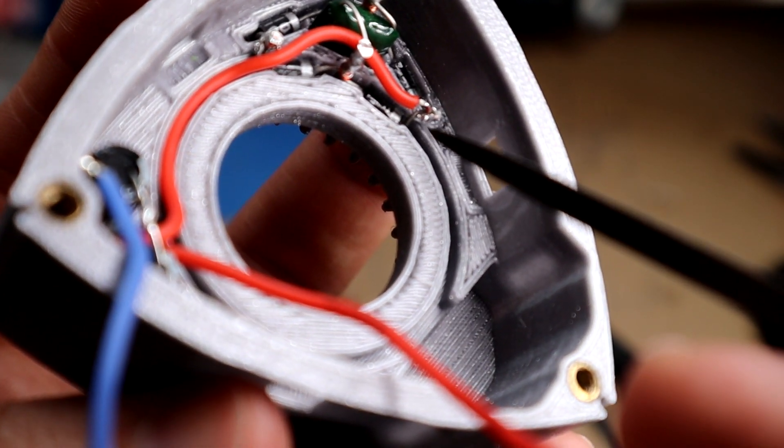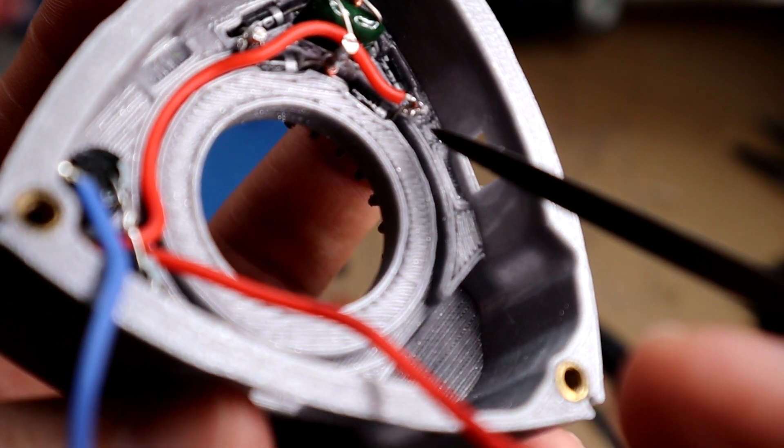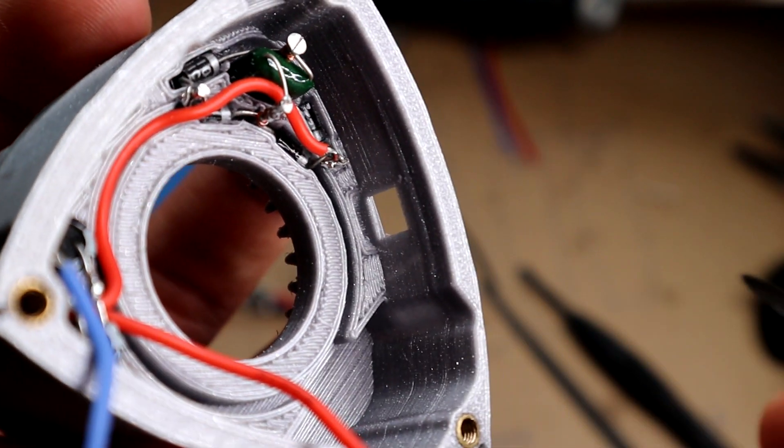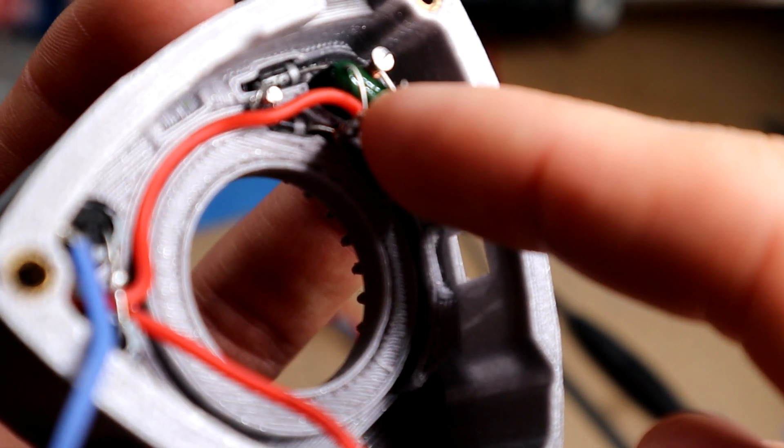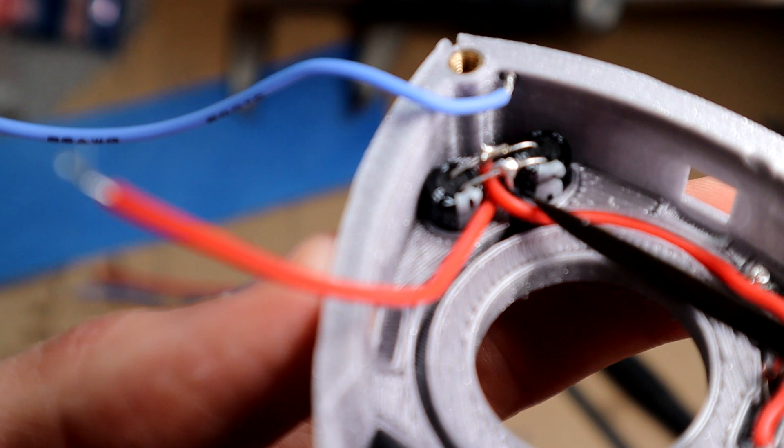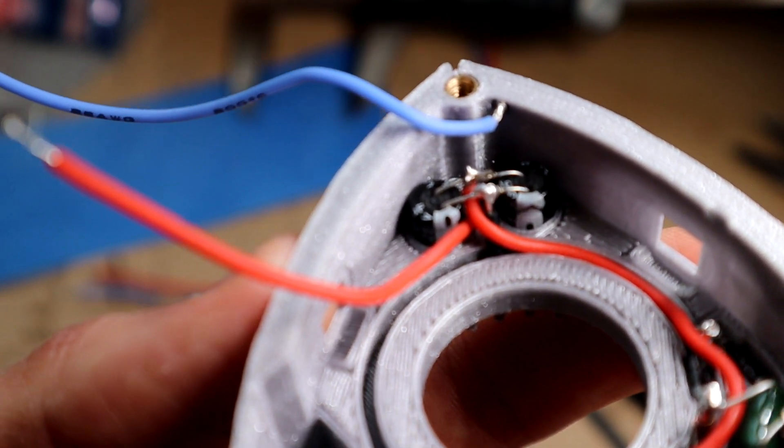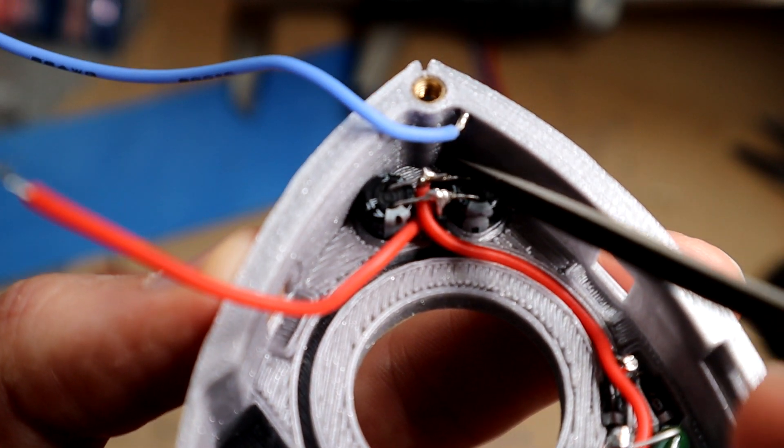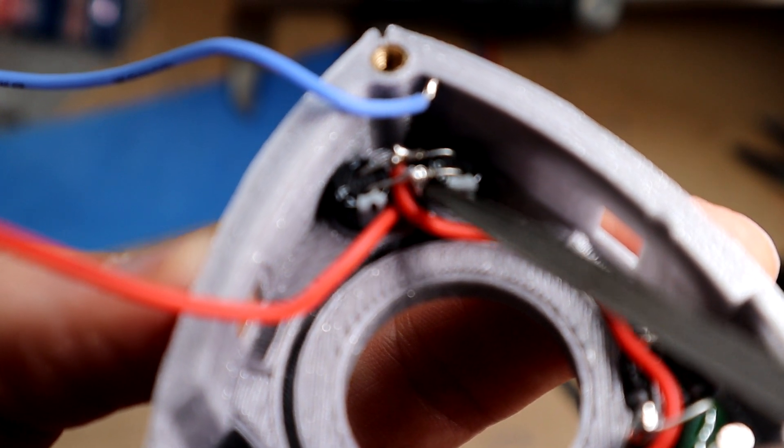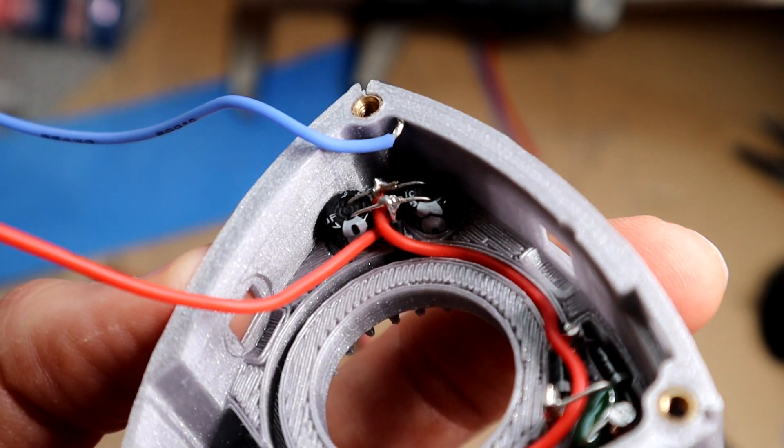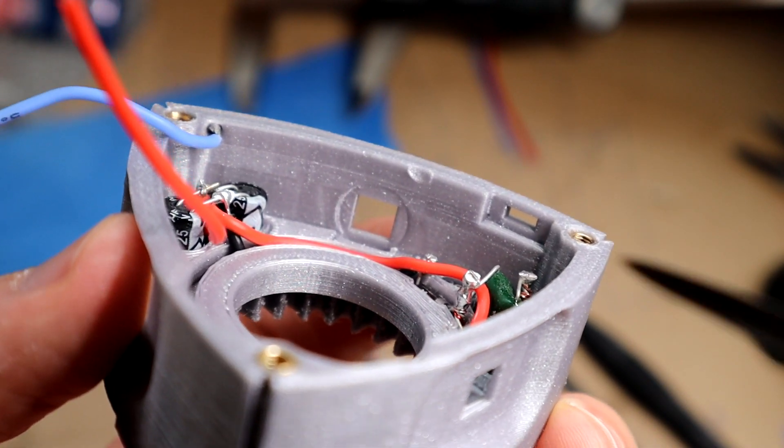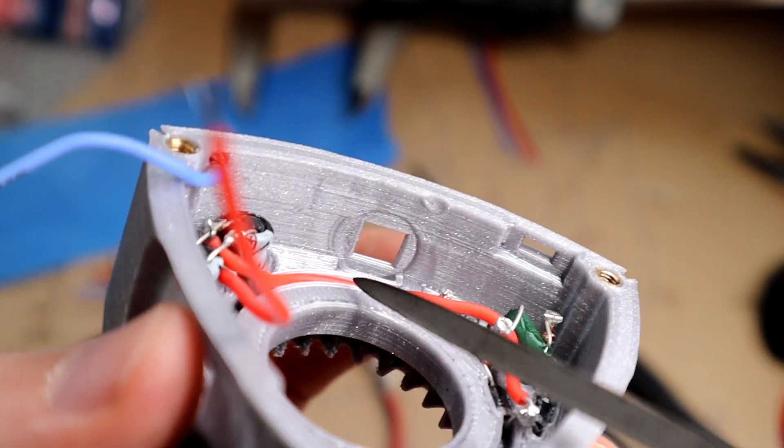So we're taking our red positive side on the diode bridge and we're having it go. I had it feed under here just to make it look a little nicer, a little neat. And then it feeds on top of that black wire and it goes on to this positive side of the capacitors.